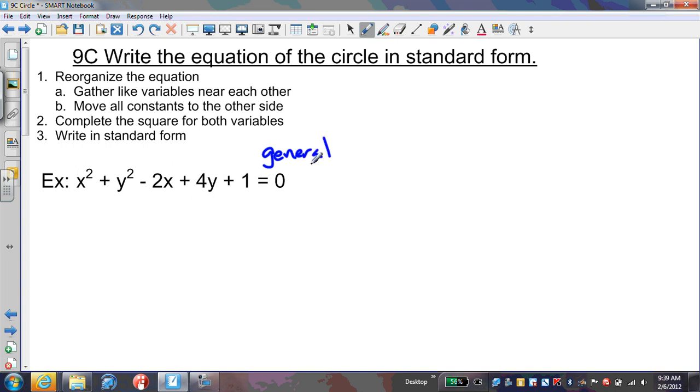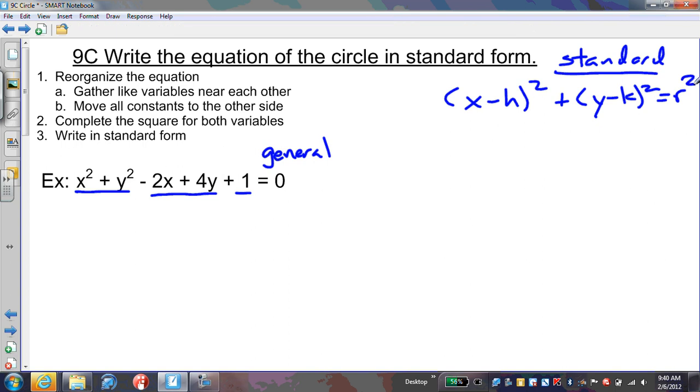What makes it general form is that we have the x squared terms up front, followed by single degree terms, followed by the constant at the end. What we want to do is put it in standard form. Standard form looks like (x - h)² with x together, then (y - k)² with y together, and the radius squared on the other side.